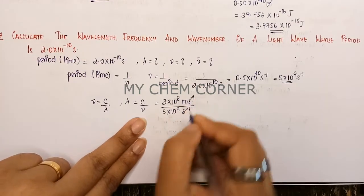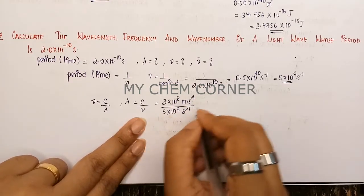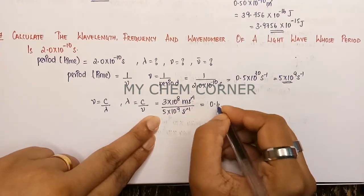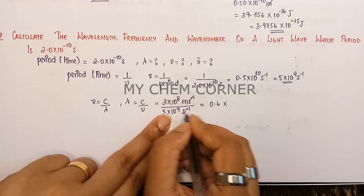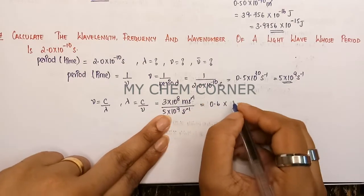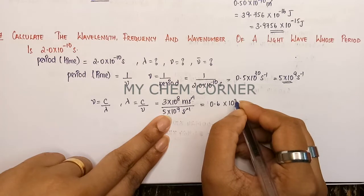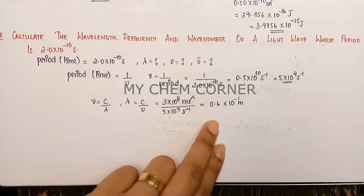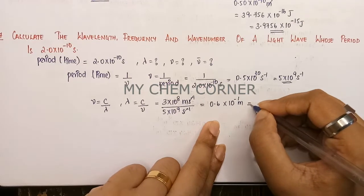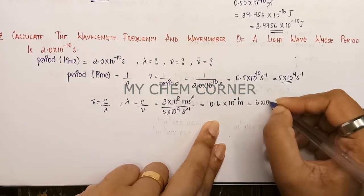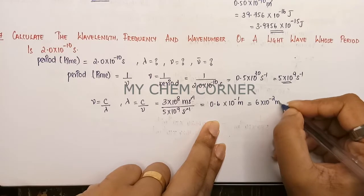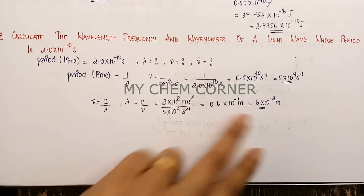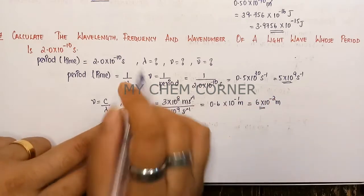The seconds cancel out, and solving: 3/5 = 0.6, and 10⁸⁻⁹ = 10⁻¹, giving 0.6 × 10⁻¹ meters. Shifting the decimal, this becomes 6 × 10⁻² meters. That is our wavelength.